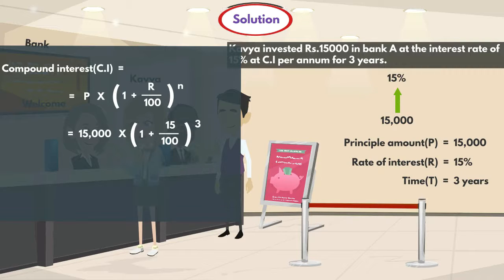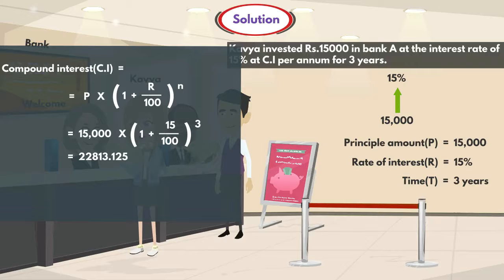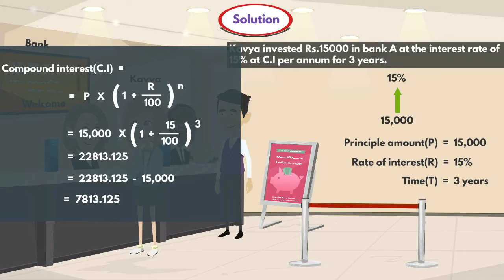After solving this, we get 22,813.125. So compound interest equals total amount minus principal amount, that is 22,813.125 minus 15,000, which equals 7,813.125.